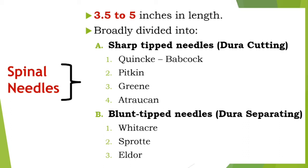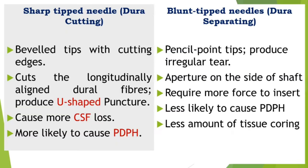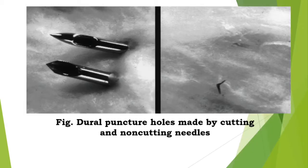Sharp tip needles are beveled tips with cutting edges. They cut the longitudinally aligned dural fibers, producing a U-shaped or V-shaped puncture. These sharp tip needles cause more CSF loss, which in turn will cause post-dural puncture headache (PDPH).